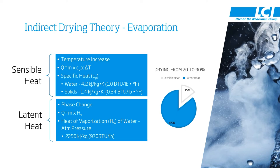Once we have the sludge at boiling, we can switch to latent heat. This is the phase change — this is where we're taking the water and turning it into vapor. In this case we use Q, again heat, equals mass, but this time it's the mass of the evaporated water, and we multiply it by the heat of vaporization, HV, of water. Once we have the latent heat, we add it to the sensible heat to get the total heat. The pie graph shown here demonstrates that the vast majority of heat required to evaporate water is in the form of latent heat.